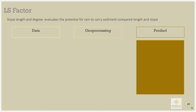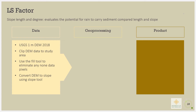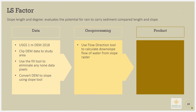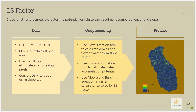The LS factor — slope length and degrees — evaluates the potential for rain to carry sediment compared to length and slope. Data was gathered using USGS 1-meter digital elevation models, or DEM. The DEM was converted to a slope raster using the slope tool, and again converted to a flow direction raster to calculate downslope flow of water. This was then used to calculate flow accumulation. Using the Moore and Birch equation in the raster calculator, the LS raster was produced.